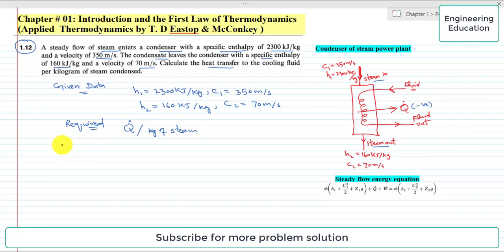Coming to the solution of this problem, we can apply the steady flow energy equation, which has this form. Writing it: ṁ(h₁ + c₁²/2 + z₁g) + Q̇ + Ẇ